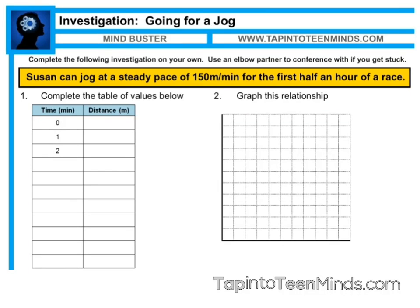For this mind buster, we're going to be taking a look at a scenario where a person's jogging at a steady pace. This is at the first portion of the race, so it says the first half an hour of a race. We do know that the distance will begin at zero since this person is just starting the race. At time zero minutes, the runner is at zero meters, so they have not left the finish line yet.